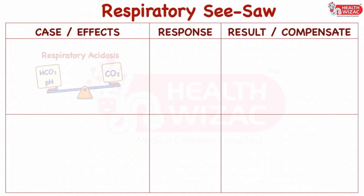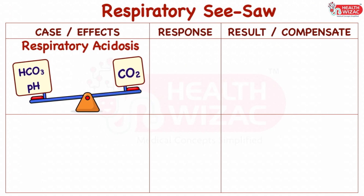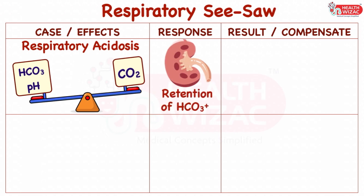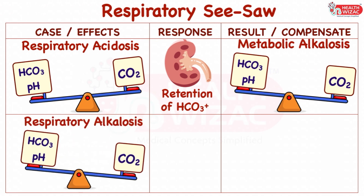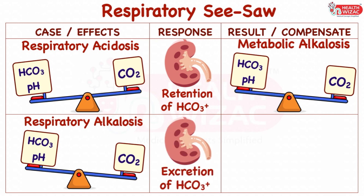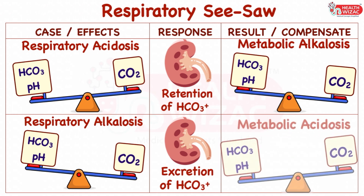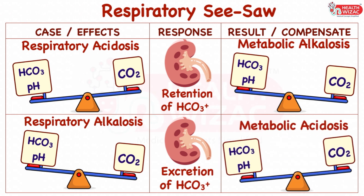Respiratory acidosis causes an increase in CO2 level and decrease in pH and bicarbonate levels. To compensate, the body triggers the kidneys to retain more bicarbonate ions, resulting in an increase in bicarbonate levels and ultimately a decrease in CO2 level. Respiratory alkalosis causes a decrease in CO2 level and increase in pH and bicarbonate levels. To compensate, the body triggers the kidneys to excrete more bicarbonate ions, resulting in a reduction of bicarbonate levels and ultimately metabolic acidosis.